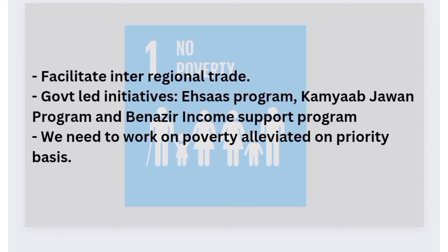Regarding steps our government has taken so far for poverty reduction, programs like Ehsaas and Benazir Income Support Program have been introduced. However, these programs provide financial aid to people, and in the long term they are unsustainable — we cannot attain sustainable poverty reduction through them. If these programs are abolished in the future, people will fall back into poverty, so this is not a good way to solve the issue.